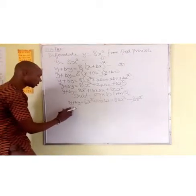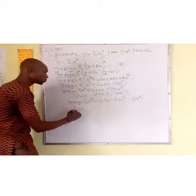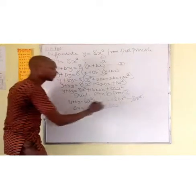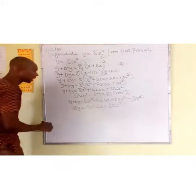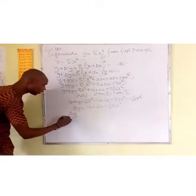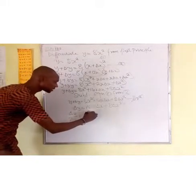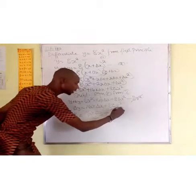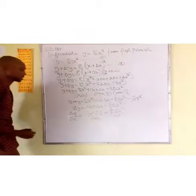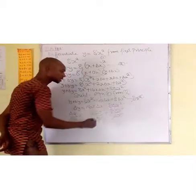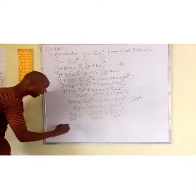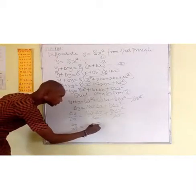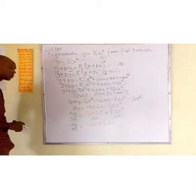Now we have y plus Δy equal to 16x·Δx plus 8Δx squared. Dividing by Δx: Δy over Δx equals 16x·Δx plus 8Δx squared, all over Δx. This will cancel out, leaving Δy over Δx equal to 16x plus 8Δx.